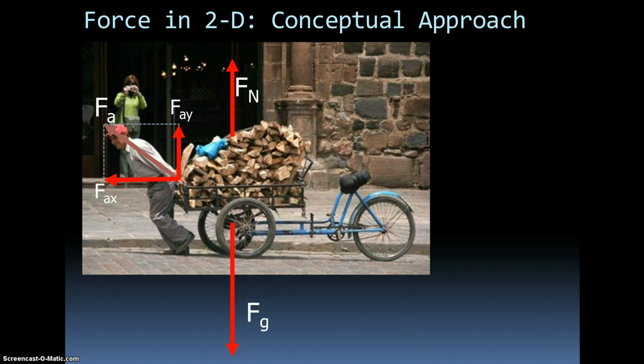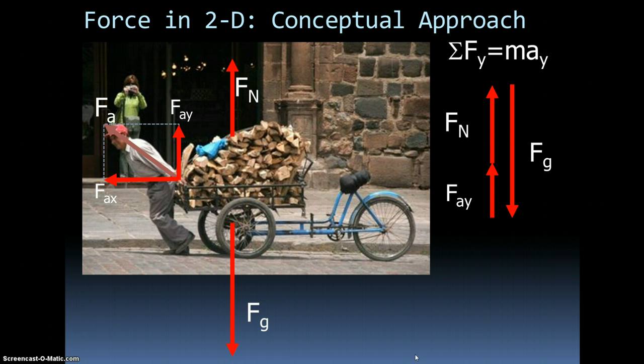You may have noticed in this case that the normal force is a little bit smaller than the force of gravity. Well, why is that? The load that he's pulling is not accelerating in the y direction, so all the forces in the y direction must cancel each other out. In other words, the cart is not changing its velocity. Its acceleration is zero, so the sum of all the forces has to be zero. We have a normal force up and a y component of the pull going up, so these two forces must balance out the force of gravity. So in this case, the normal force is a little bit smaller than the force of gravity. Then we have an x component of the force. This is the force causing the acceleration of the load.